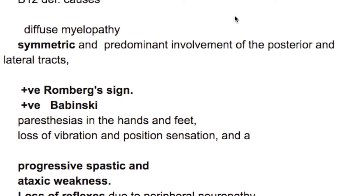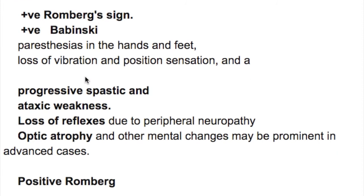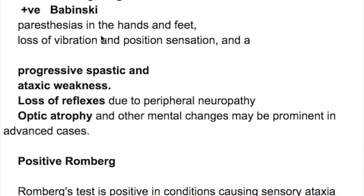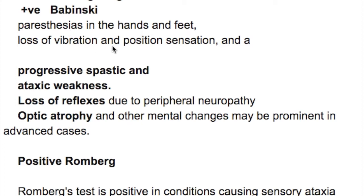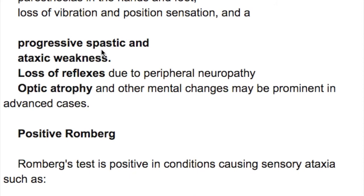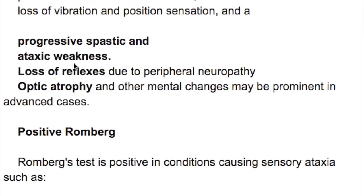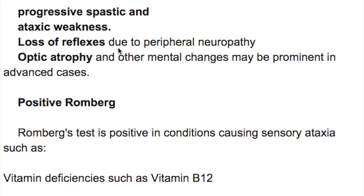There is a positive Romberg sign and a positive Babinski sign. There are paresthesias in the hands and feet, loss of vibration and position sensation, and progressive spastic and ataxic weakness. Loss of reflexes due to peripheral neuropathy, optic atrophy, and mental changes may be present in advanced cases.